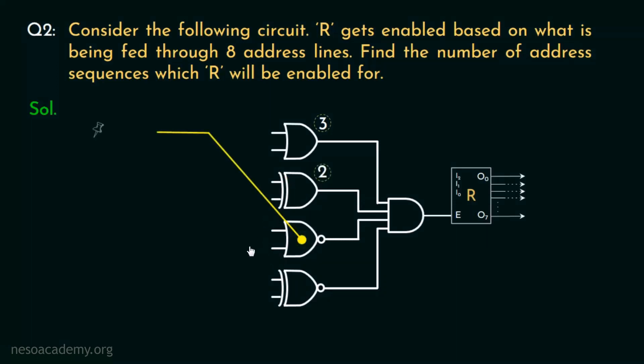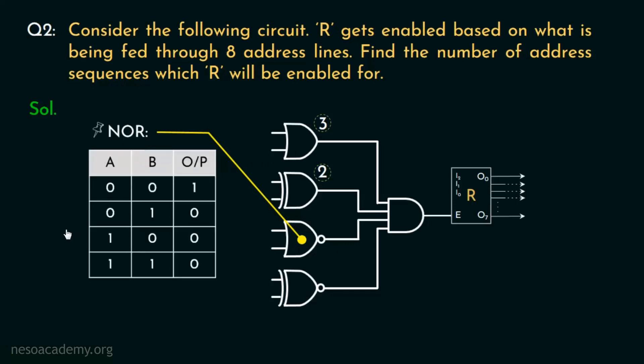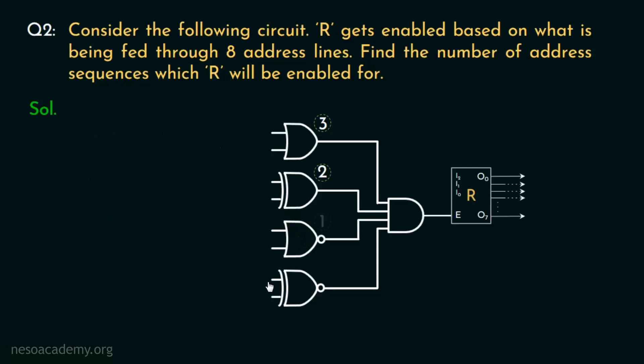Now the next 2 address bits are given to a NOR gate. NOR is actually NOT OR. That is, if we complement the output of OR gate, we will end up getting NOR. Observe NOR's truth table. Remember, OR produces 1 in case any or all of the input lines are 1's. Contrarily, in case of NOR, 0,0 will produce 1. That is, only the case when none of the inputs are 1. So address bits given to the NOR gate will have only 1 instance of sequence.